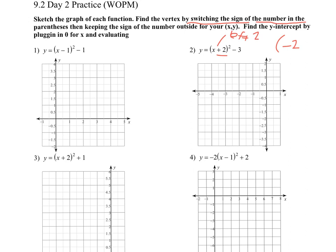That shift left two applies to the vertex. Then this number out back, we're going to put as negative three — it says to keep the sign of the number outside. So this would be a shift down three, which gives us negative three at the vertex. So it's really easy to find the vertex here.